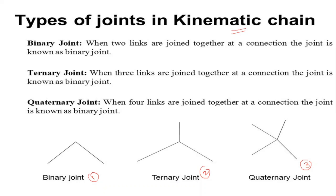Binary means two links. When two links are joined together at the same point or same connection, this type of joint is called a binary joint. For example, link one and link two each have two nodes; when they join at the same point, that is a binary joint.